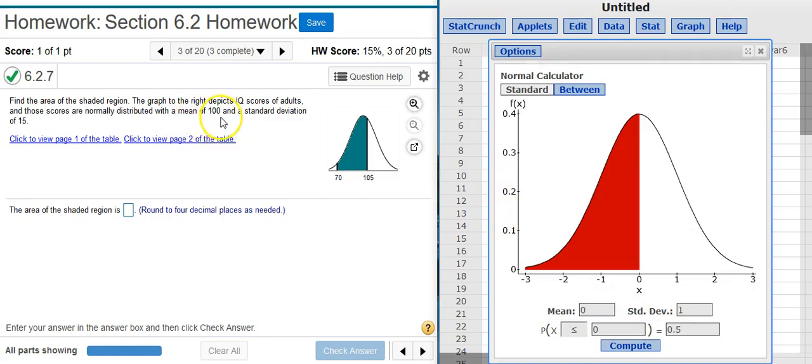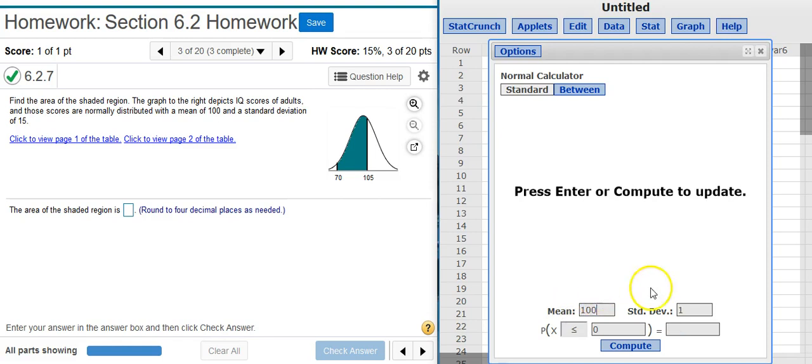Now, here it says that the mean of the distribution is 100, and the standard deviation is 15. So, I'm going to put those values in here, my calculator.